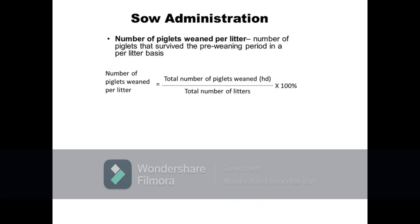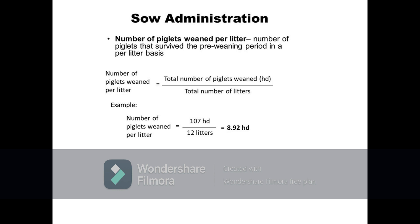Next parameter is the number of piglets weaned per litter. This refers to the average number of piglets that survive the pre-weaning stage on a per litter basis. It is calculated as total number of piglets weaned divided by the total number of litters from which these weaned piglets are produced. For example, if there were 107 piglets weaned from 12 litters or farrowings, the average number of weaned piglets per litter is calculated as 107 divided by 12, equals 8.92.